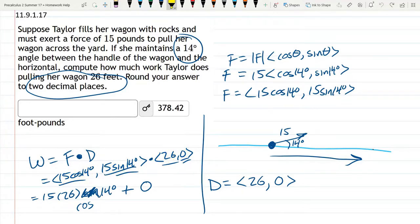And I did type it into a graphing calculator. I did get the 378, I got 0.415, etc., but it does round to 378.42, so do round to two decimal places.